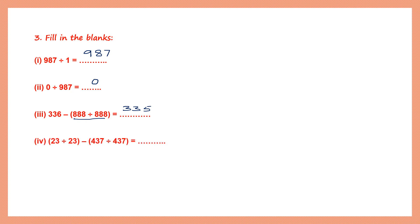Question 4 fill-in: 23 divided by 23 minus 437 divided by 437. Any number divided by itself equals 1, so this is 1 minus 1, which equals 0.